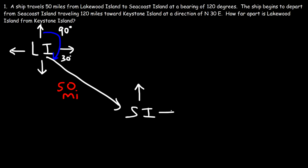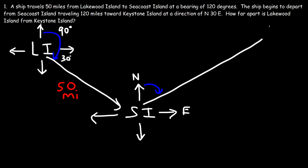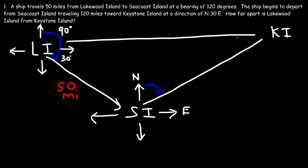Now from Seacoast Island, it's going to go 120 miles towards Keystone Island in a direction north, 30 degrees east. So the direction is stated. Here's north, here's east — we're going to travel 30 degrees towards the east. So the ship is going to go in this direction towards Keystone Island. Our goal is to determine the distance D between Keystone Island and Lakewood Island. The distance between Seacoast Island and Keystone Island is 120 miles.